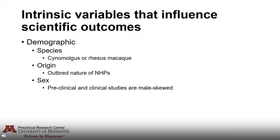Our center typically works with two species of NHPs: cynomolgus and rhesus macaques. Through our work we have found that both species have different baseline cytokine expression, so it's important not just to avoid comparing between species, but also to think carefully about which ones are included in your work. Next, we consider origin — our NHPs are outbred and therefore have much higher variability in cytokine and genetic expression compared to inbred rodent models with specific genetic profiles.